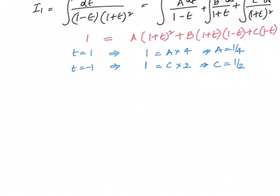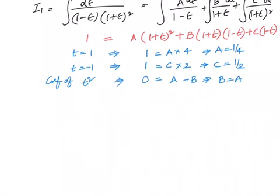We still need to find b. We will compare the coefficient of t squared. The coefficient of t squared on the left-hand side is 0. On the right-hand side, from a into 1 plus t whole squared we get a, and from b into 1 minus t squared we get minus b. That means b equal to a, which is equal to 1 by 4.